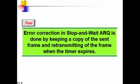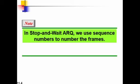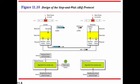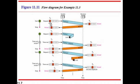In stop-and-wait ARQ, sequence numbers are used to number the frames. The acknowledgement number always indicates the sequence number of the next expected frame. The sequence starts at zero, then increments to one, and so on, telling both sides what the next frame to arrive should be. This concludes the discussion of the data link layer and its protocols.